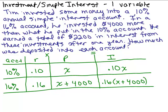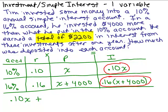What else do we know from reading this problem? He earned a total of $2,200 in interest from these investments. So however much he earned in interest from each account, when I add them together, it should add up to $2,200. So how much did he earn from the 10% account? Right here is how much he earned in interest for the 10% account. So we have that much money, plus how much did he earn in the other account? He earned 0.16 times x plus 4,000, and how much money is that all together? Well, it says it's a total of 2,200. So that interest amounts to 2,200.